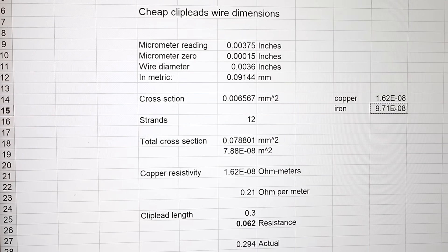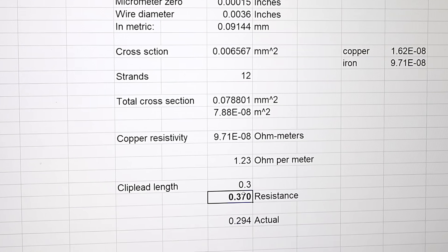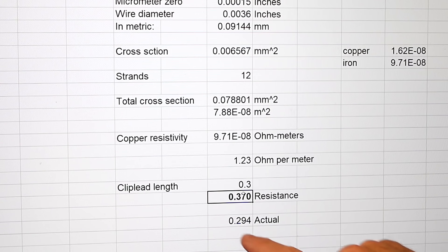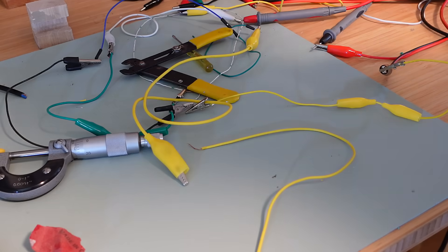So, let's try plugging in the resistivity of iron instead of copper into my formula. And, now my prediction is 0.37 ohms versus 0.294 actual. So, it's getting fairly close. So, does this mean this clip lead wire is made out of iron?